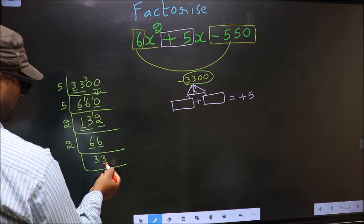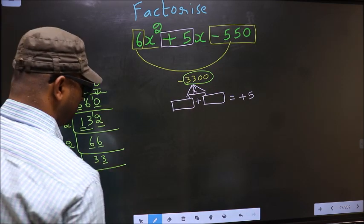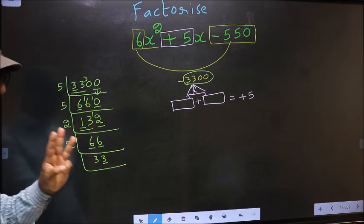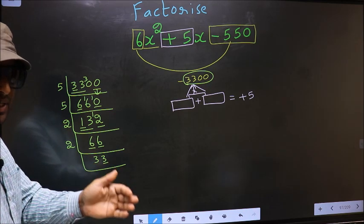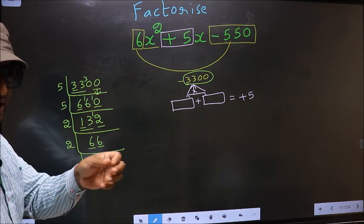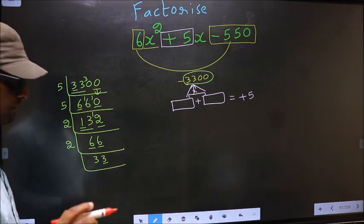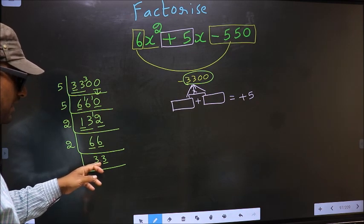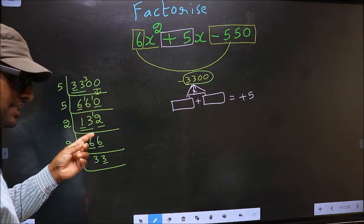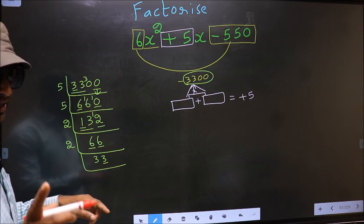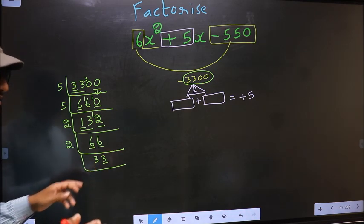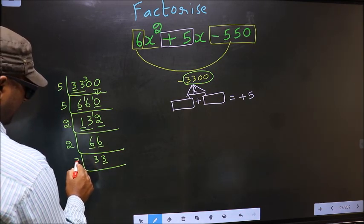Now last digit 3, not even, so not divisible by 2. Next prime number 3. To check divisibility by 3, for that we should add the digits. That is 3 plus 3, 6. Is 6 divisible by 3? Yes. So this number also divisible by 3. So we take 3 here.